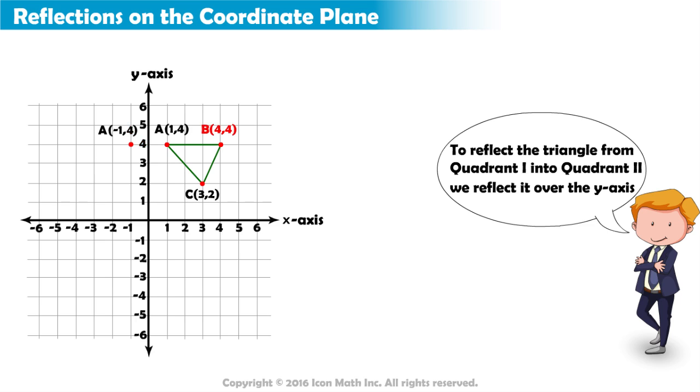Point B(4,4) must be four places away from the y-axis. Notice the new point is located at negative 4, 4.